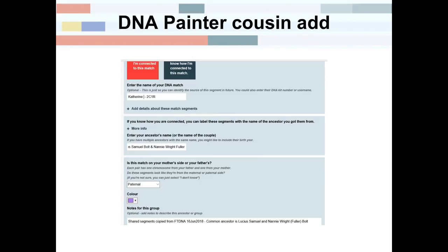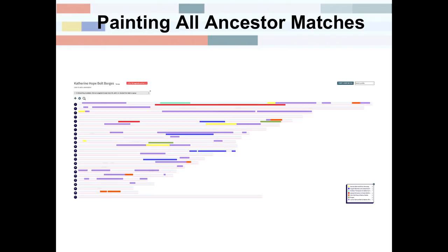When painting a cousin's match — this particular cousin is my second cousin once removed named Catherine — I list the ancestors we have in common: Lucius Samuel Bull and Nanny Wright Fuller, my great-grandparents and her great-great-grandparents. It's on our paternal side and I used purple as the color, with notes below. The system of organization I use is primarily from Blaine — I copied what he was doing. This shows what my ancestor painting looks like so far, covering ancestors on both sides of my family.